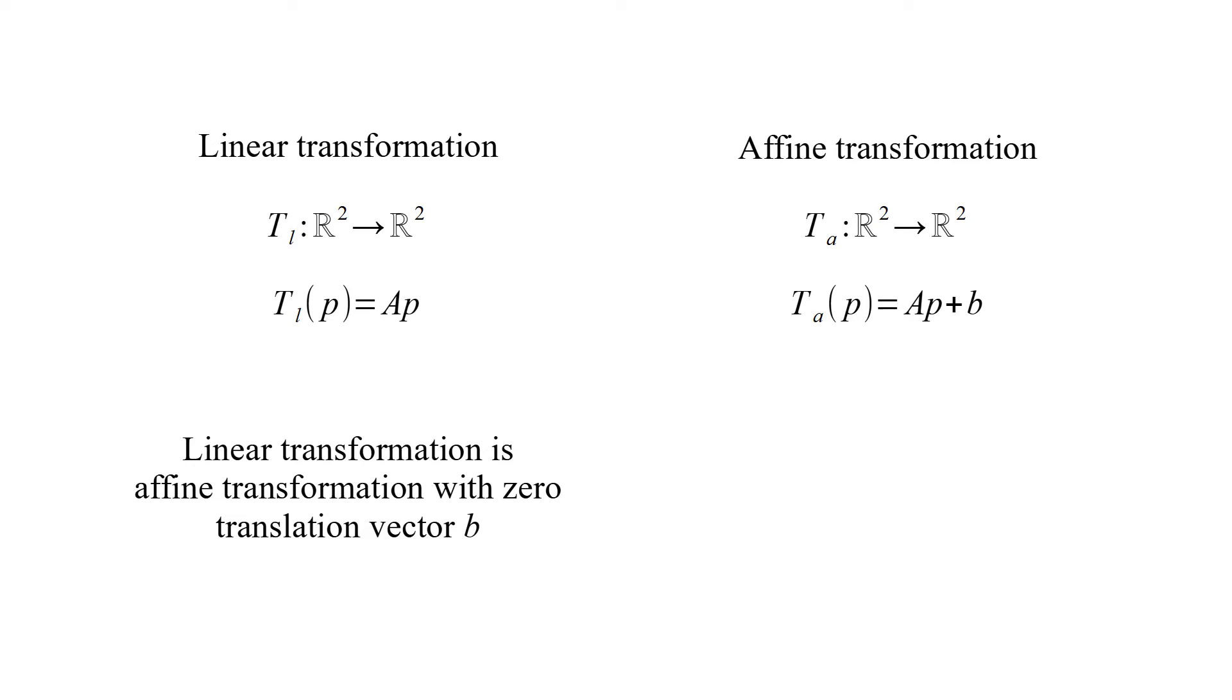Linear transformation is affine transformation with 0 translation vector B. And affine transformation is linear transformation only when B is 0 vector.